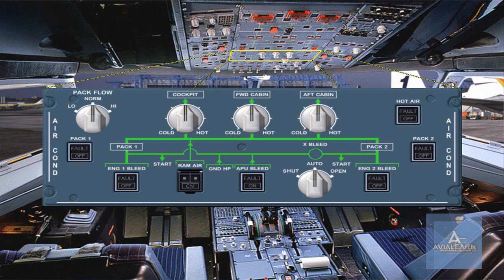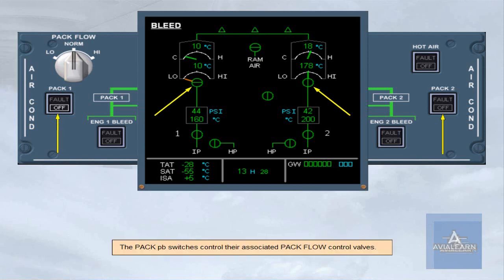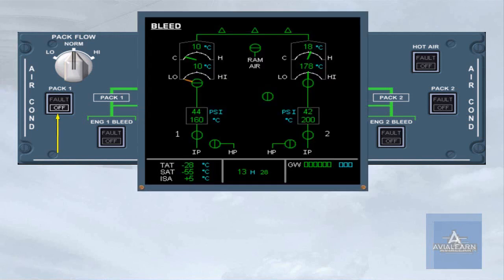On the overhead panel, the air conditioning panel allows the pilots to control the air conditioning system. The pack push button switches control their associated pack flow control valves. In this example, pack 1 push button switch is selected off and the related valve is closed; pack 2 push button switch is selected on and the related valve is open.